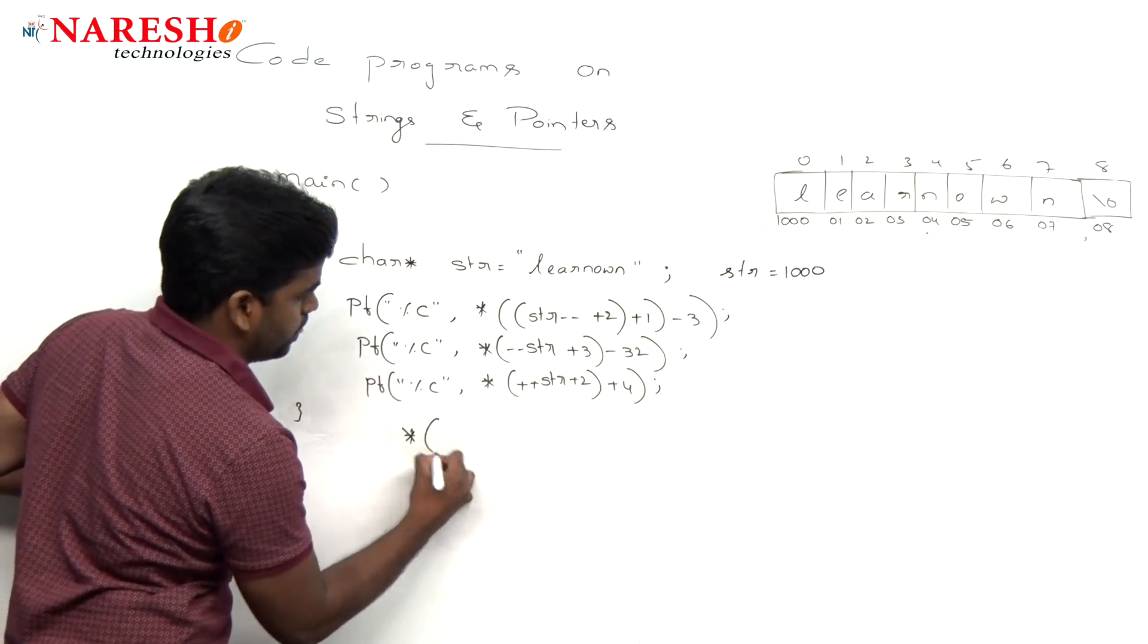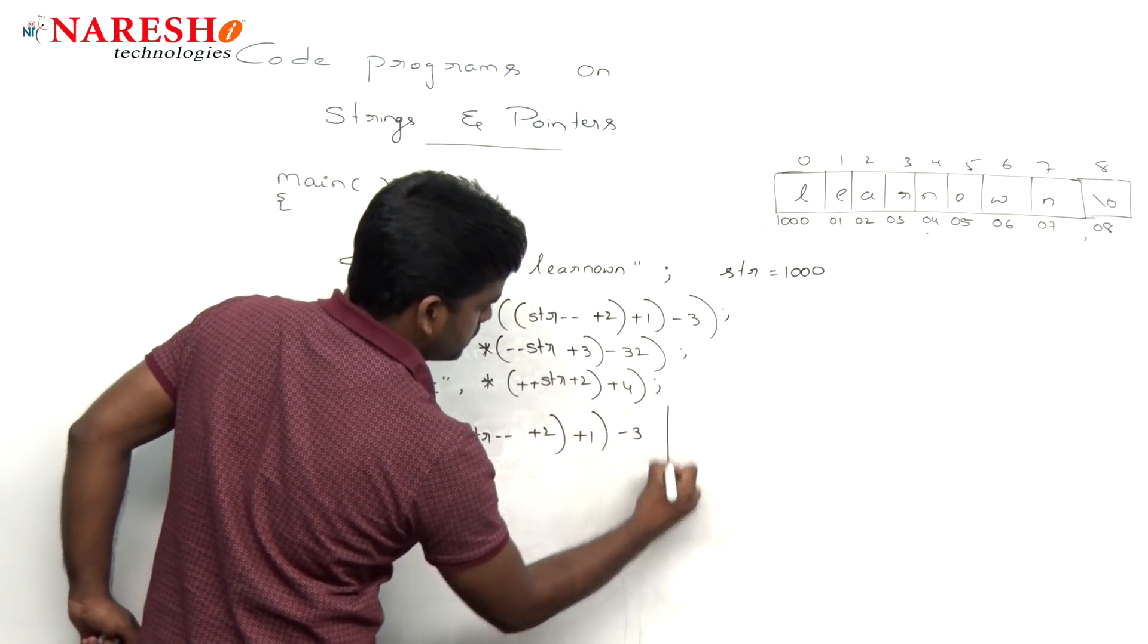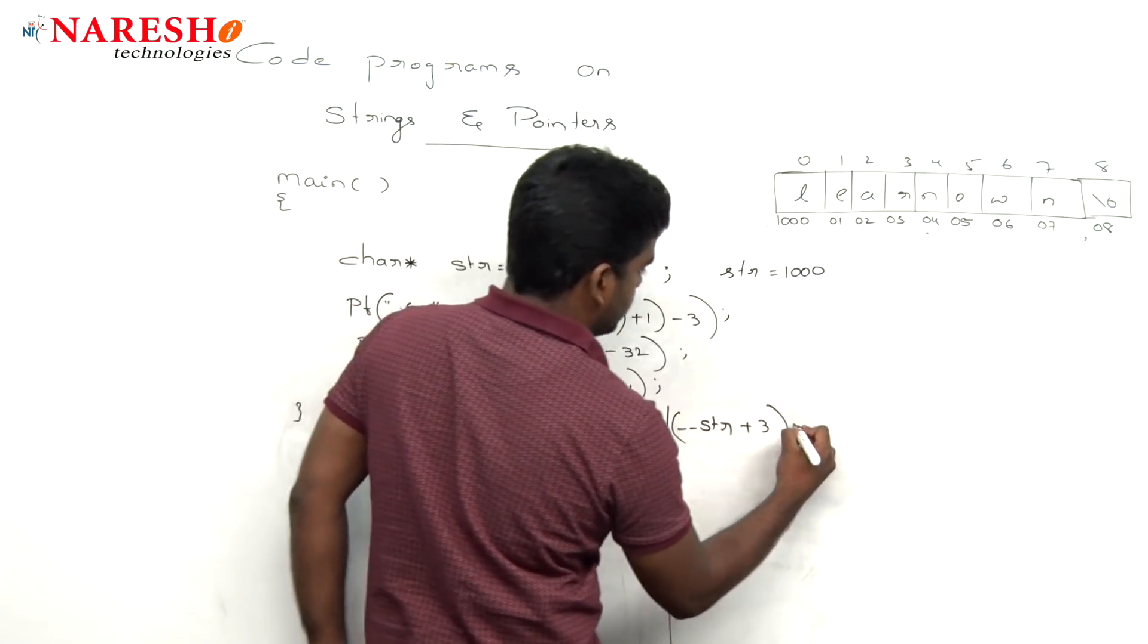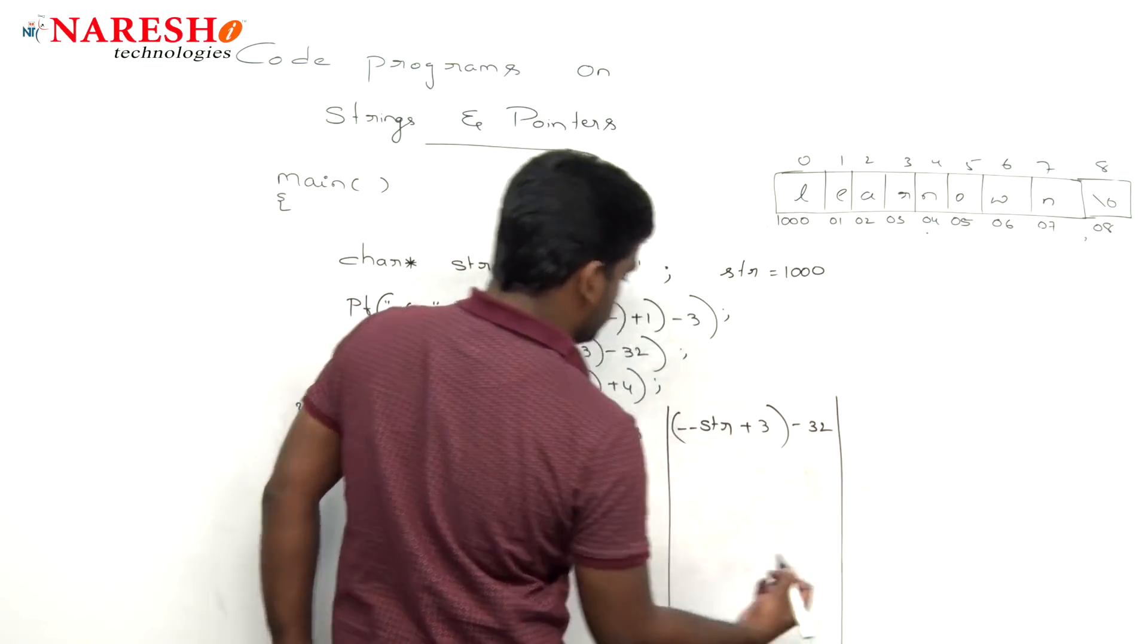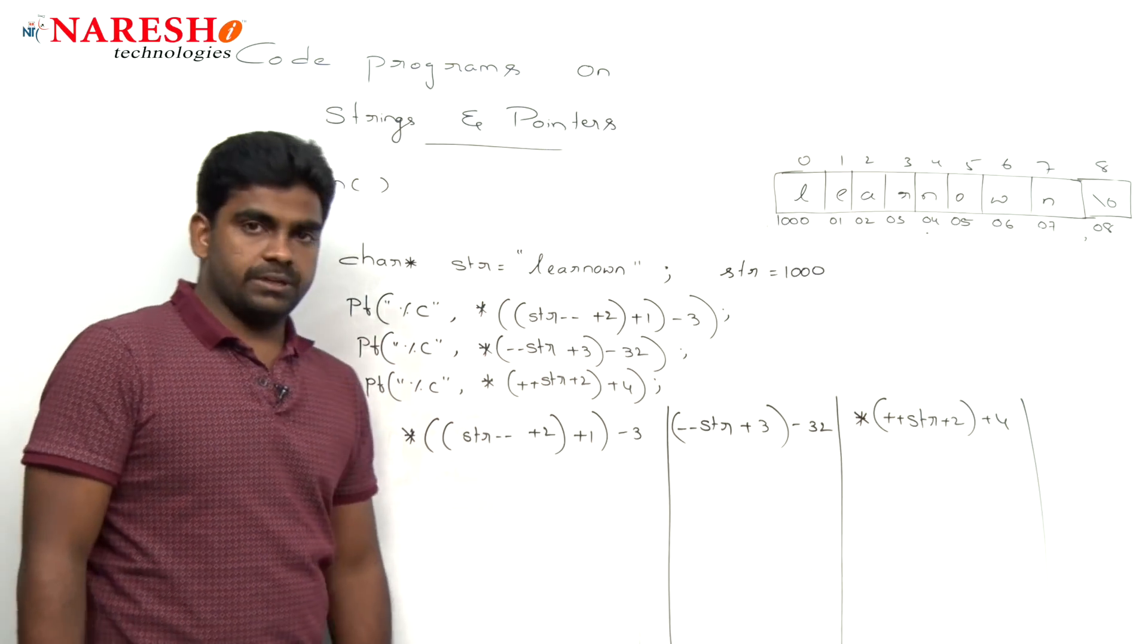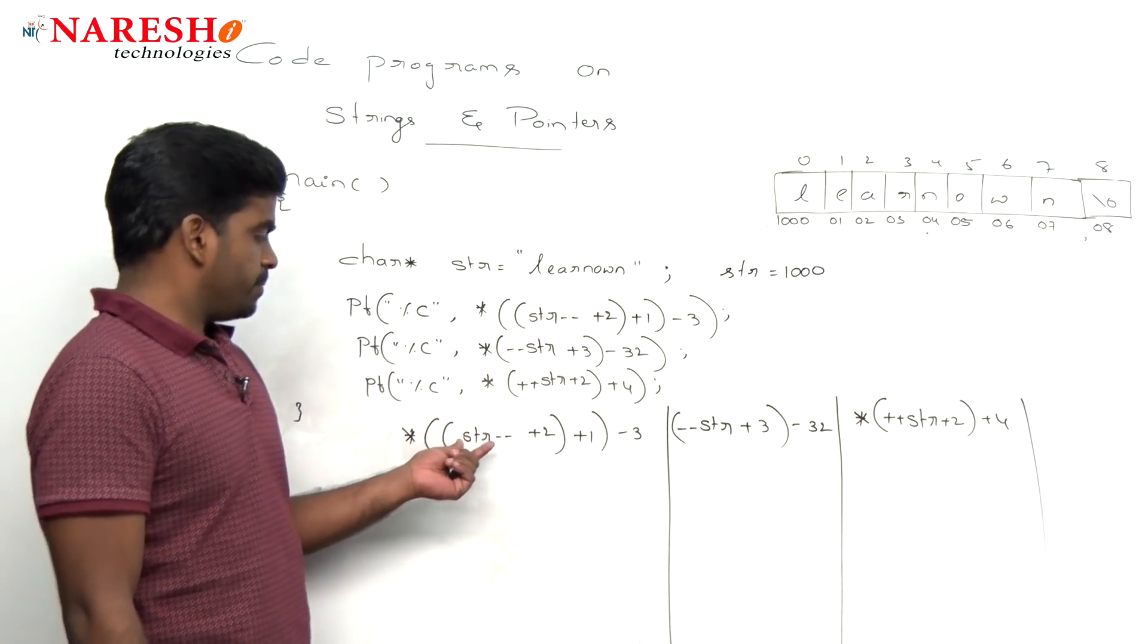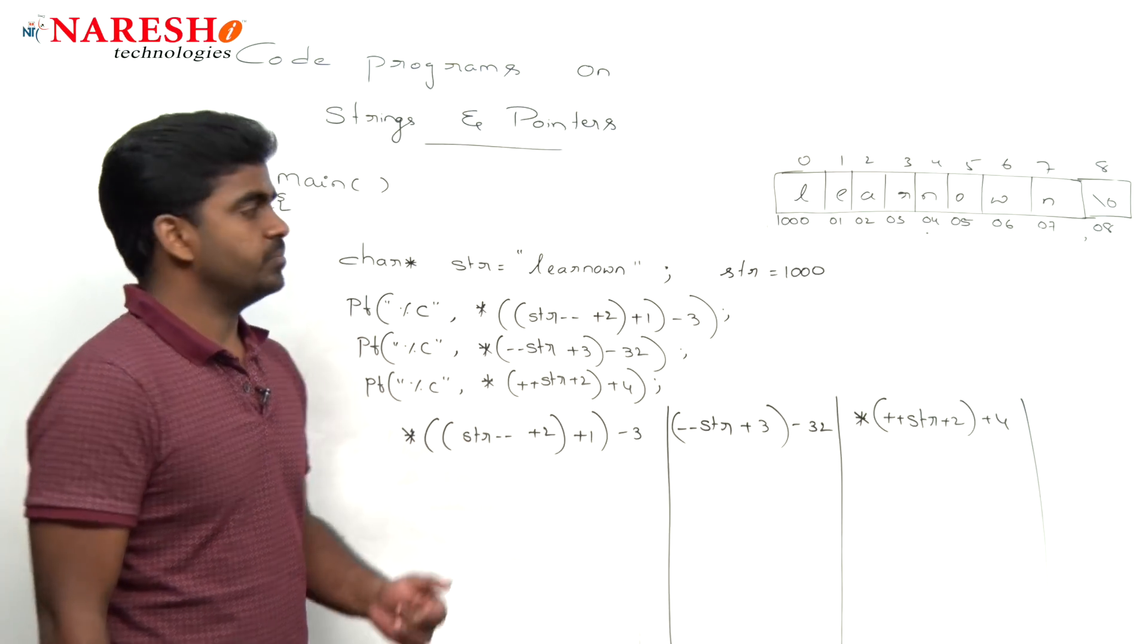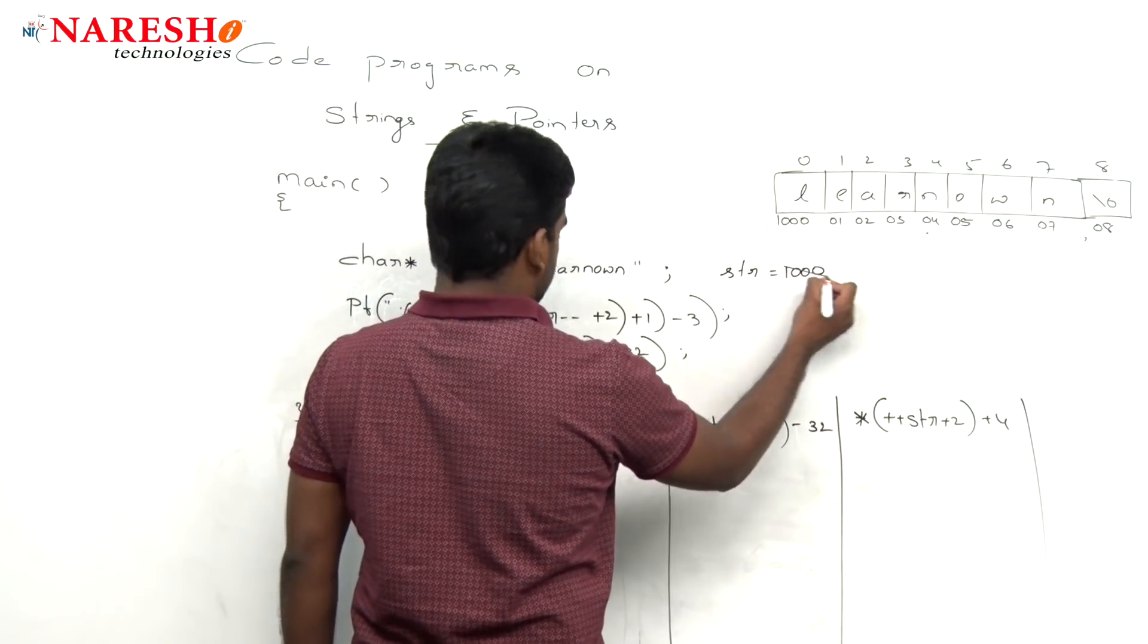Now the three expressions we are evaluating: the first expression, the second expression, and the last expression. Here str minus minus, it is a post decrement value.